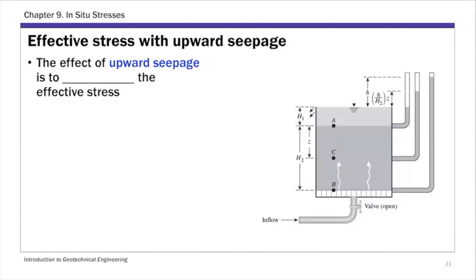The only thing left for chapter nine is effective stress with seepage. So far, what we have been discussing is basically effective stress calculation for hydrostatic condition or artesian condition — there's no water flow through soil. Today I want to spend a few minutes on this last topic: effective stress with upward and downward seepage.